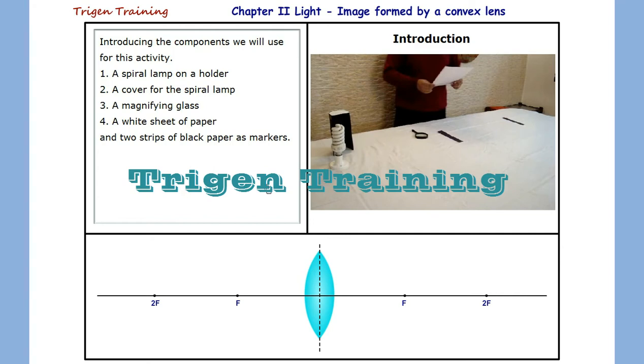Please note the distance between the spiral lamp and the first strip is 2F, and the distance between the first strip and the second strip is also 2F.